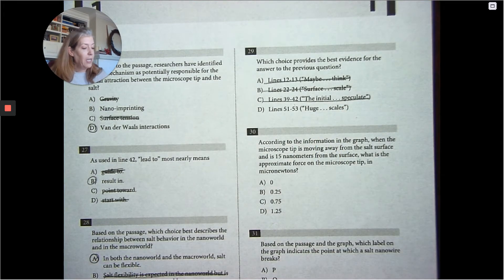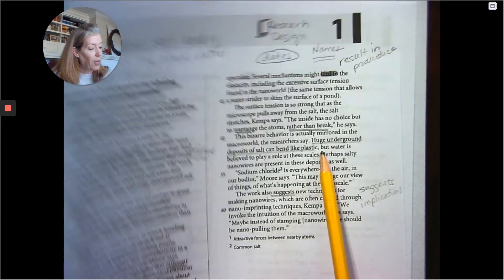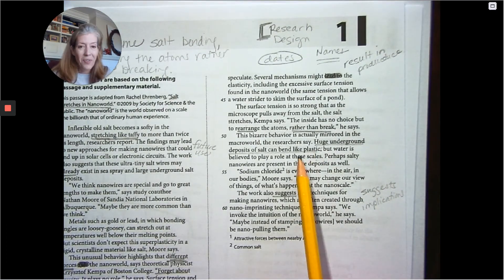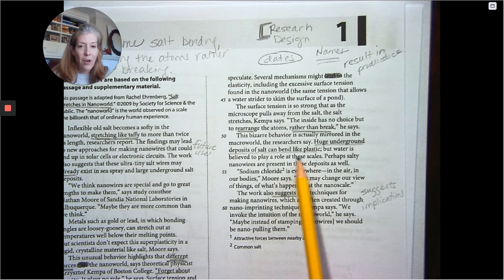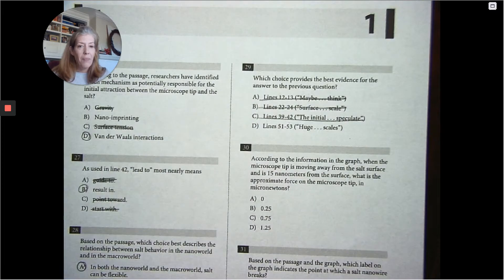And then 51 to 53. For following question order rule, this would be correct anyway. From huge to scales. Huge underground deposits of salt can be like plastic, but water is believed to play a role at these scales. So bringing it out into the macro world.